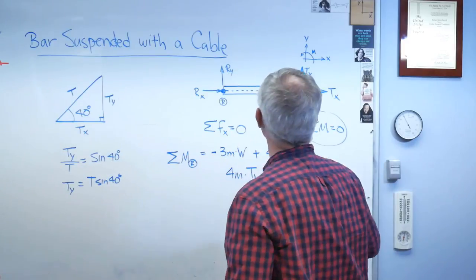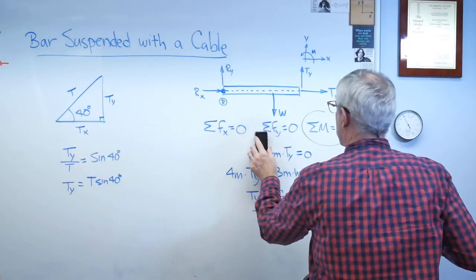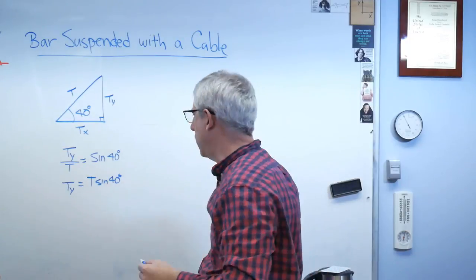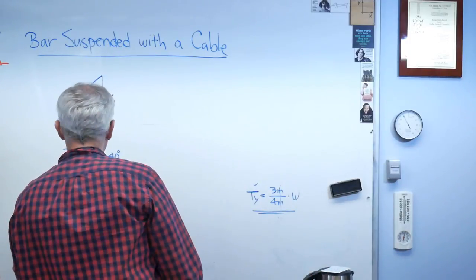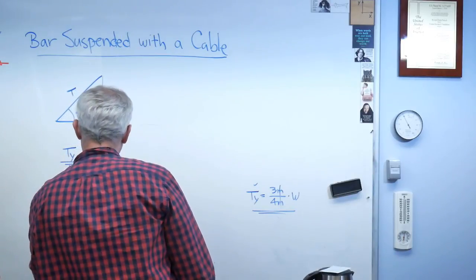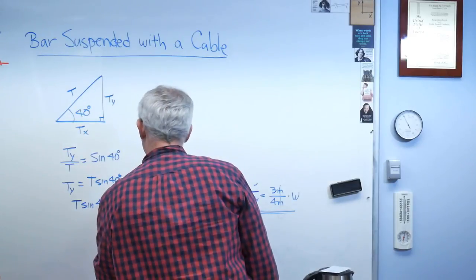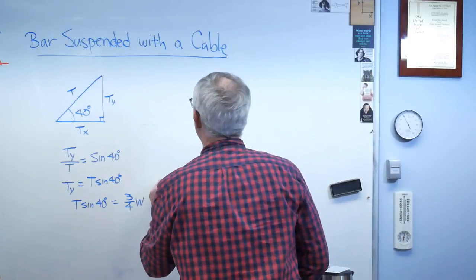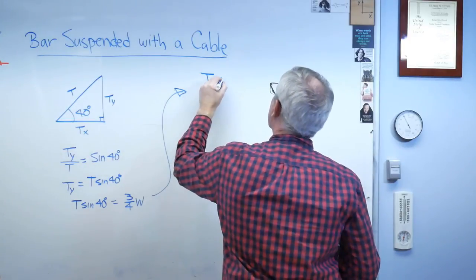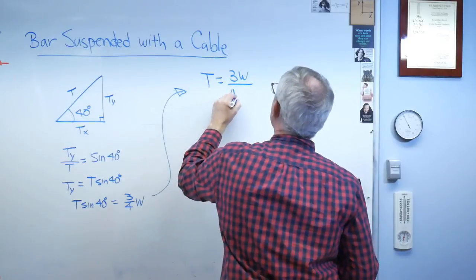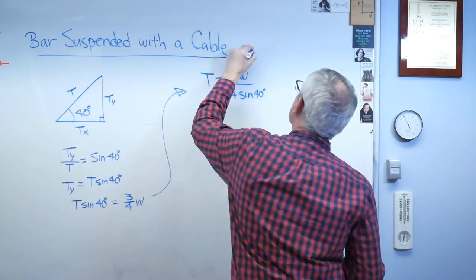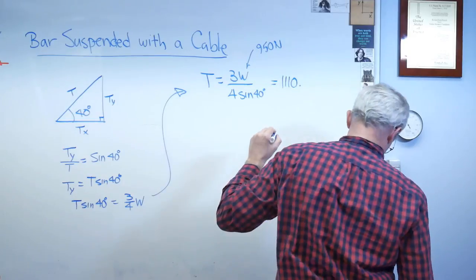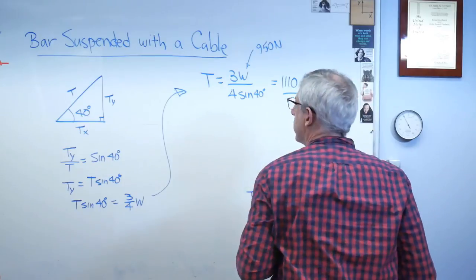Now, I need to reuse some more space here. I'm going to go ahead and erase this stuff that I don't need anymore. You guys see this down here? All right. So, T sine 40 degrees, which is TY, equals 3 over 4 W. Man, this is so easy, a professor can do it. So you know what this has got to be like. So let's just bring this on home here. That's going to be 3 W over 4 sine 40 degrees. And remember, that's 950 newtons. And when you work that out, you get 1110.69 newtons. And there you go.